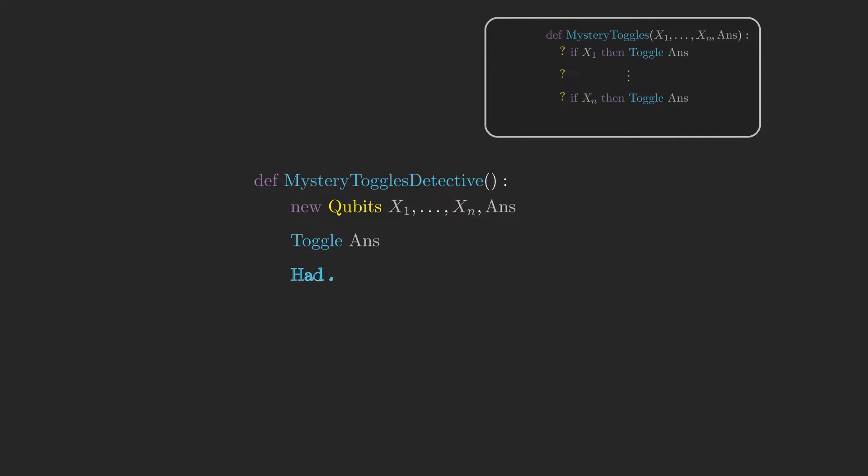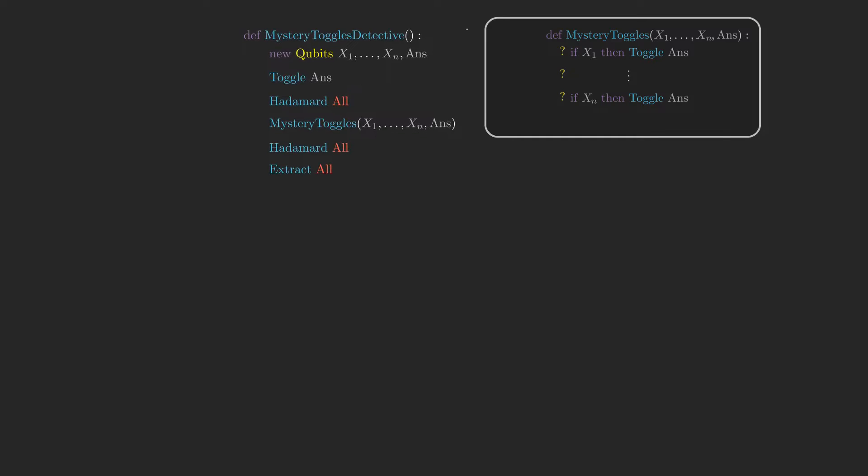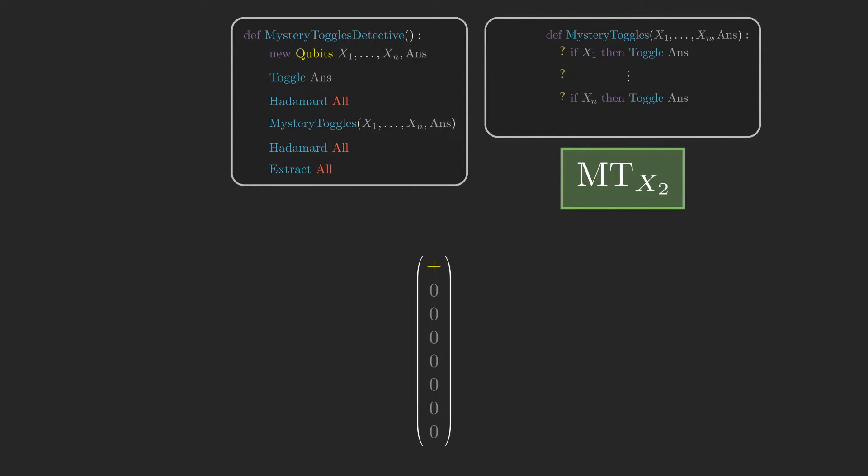And here's the code that does it! Let's do an example where n equals 2, and suppose that the version of mystery toggles we're dealing with is the one that includes just the line for x2. First, we create three new qubits, x1, x2, and answer, which induces this state vector where all of the amplitude is on the state 000. We then toggle answer, which is a bit weird because the answer qubit is where we've been collecting our results for mystery toggles, but bear with me here. The corresponding change in the state vector is that all of the amplitude gets transferred from the state 000 to the state 001.